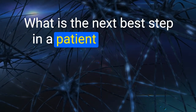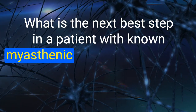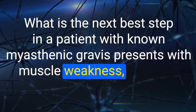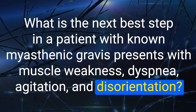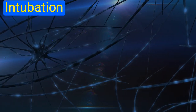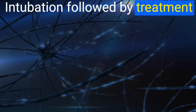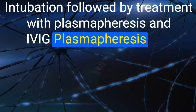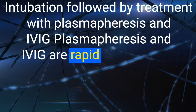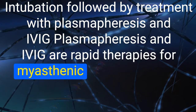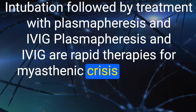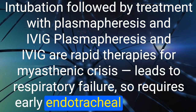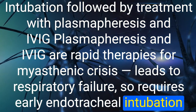140. What is the next best step in a patient with myasthenia gravis presenting with muscle weakness, dyspnea, agitation, and disorientation? Intubation followed by treatment with plasmapheresis and IVIG. These are rapid therapies for myasthenic crisis, which leads to respiratory failure and requires early endotracheal intubation.